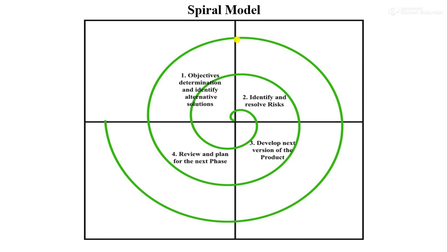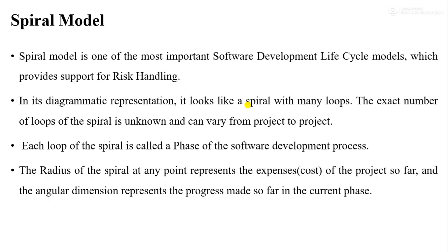The spiral model is known as the meta-model, which is capable of handling risks. It is called the meta-model because it uses all other models within it. This model is a little complicated but suitable for projects that may have different types of risks. If it is a small project with less complexity, it is better not to use the spiral model. The spiral model is suitable for projects which have different types of risks associated with them.